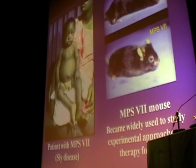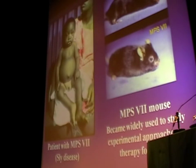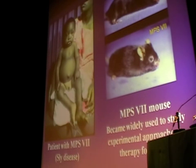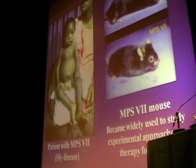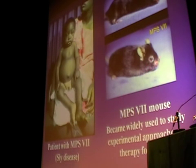About 15 years after this patient was described, Ed Birkenmeyer at the Jackson Laboratory came upon a spontaneous mutation in a mouse, which has turned out to be the MPS7 mouse deficient in beta-glucuronidase. It pretty much recapitulates almost all of the phenotype seen in the patient, but it's very well easily characterized by this short, flattened nose.